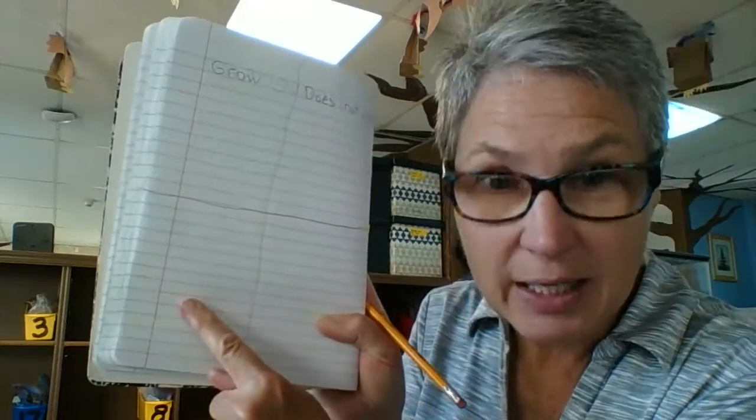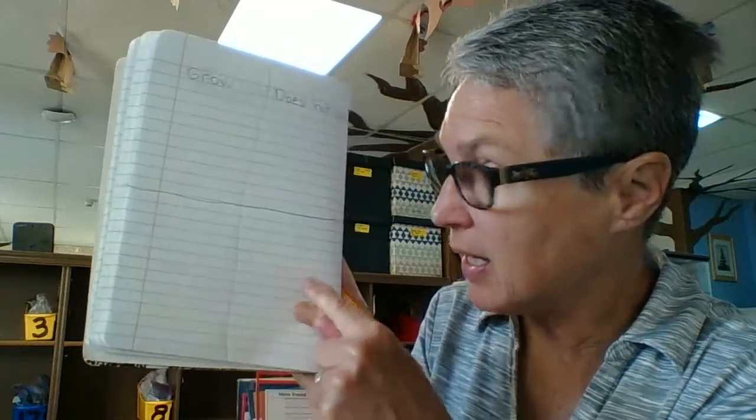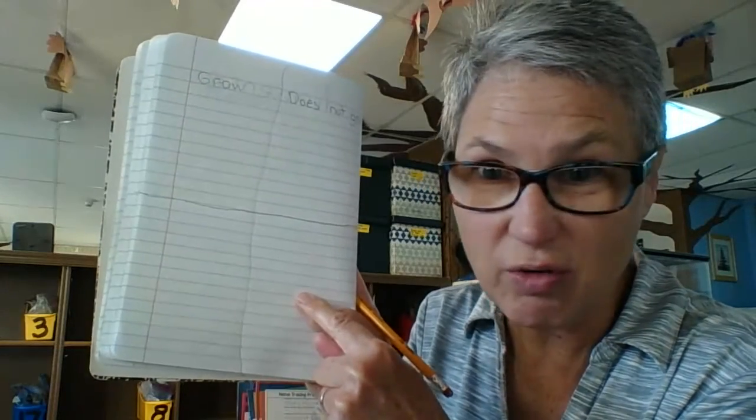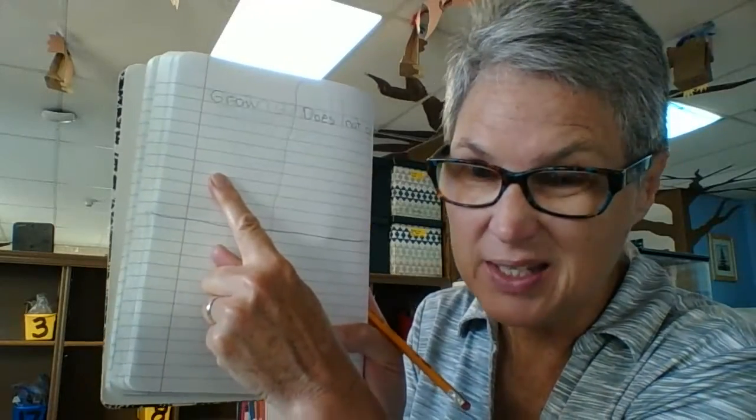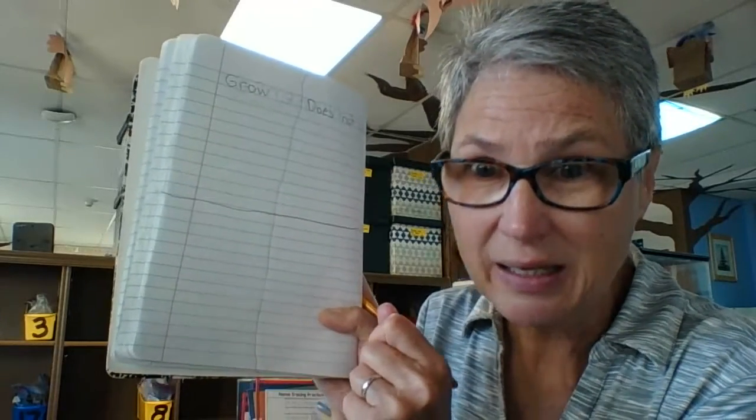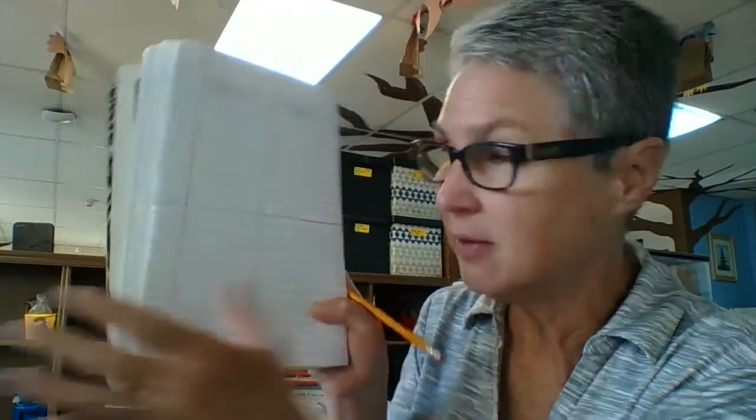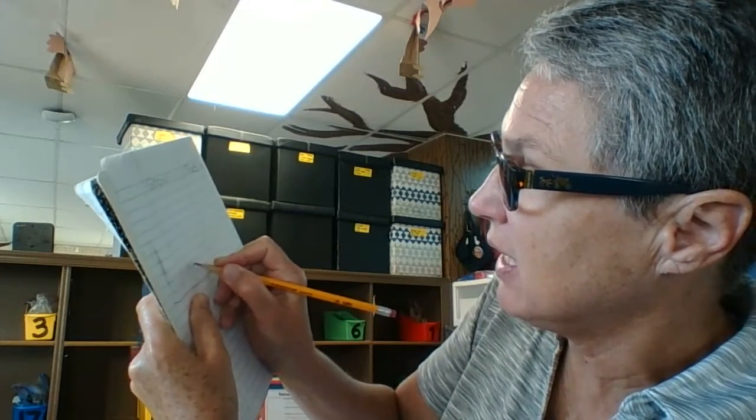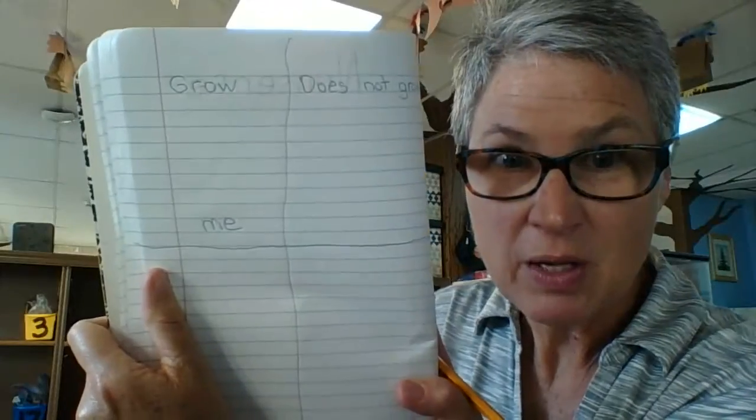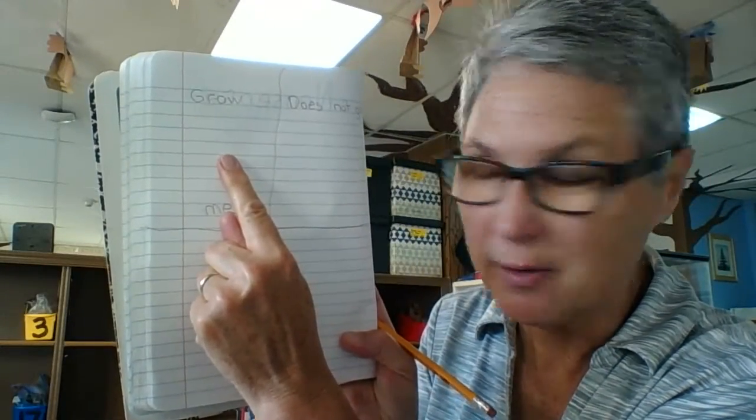Then I'll need to find another growing item and another one that does not grow. And I'll need to label them. This one will be easy because it's going to be me. And I'll put me. So I'm going to label that one right away. M-E. And I'll draw me in this box right here.